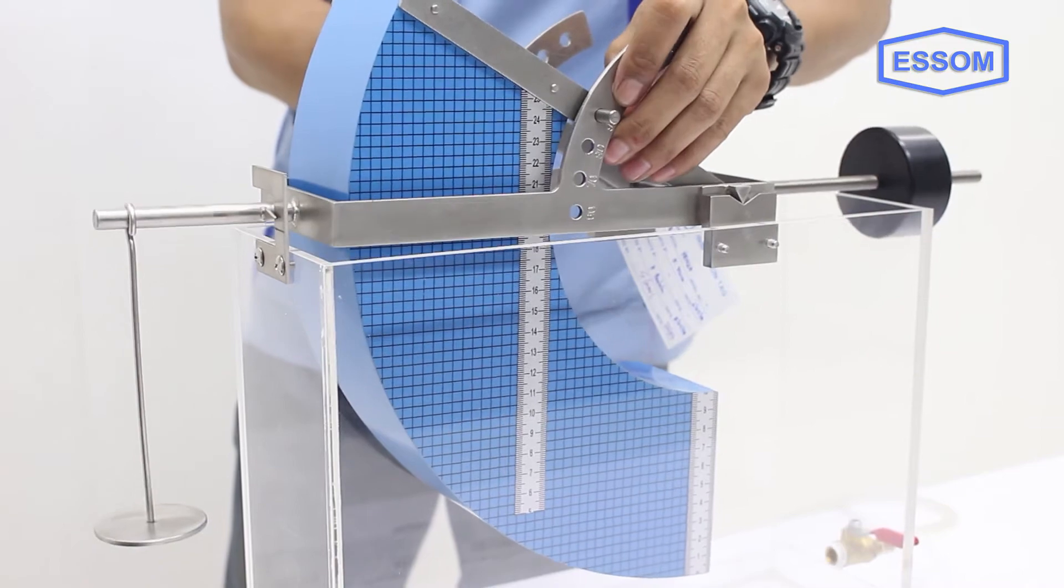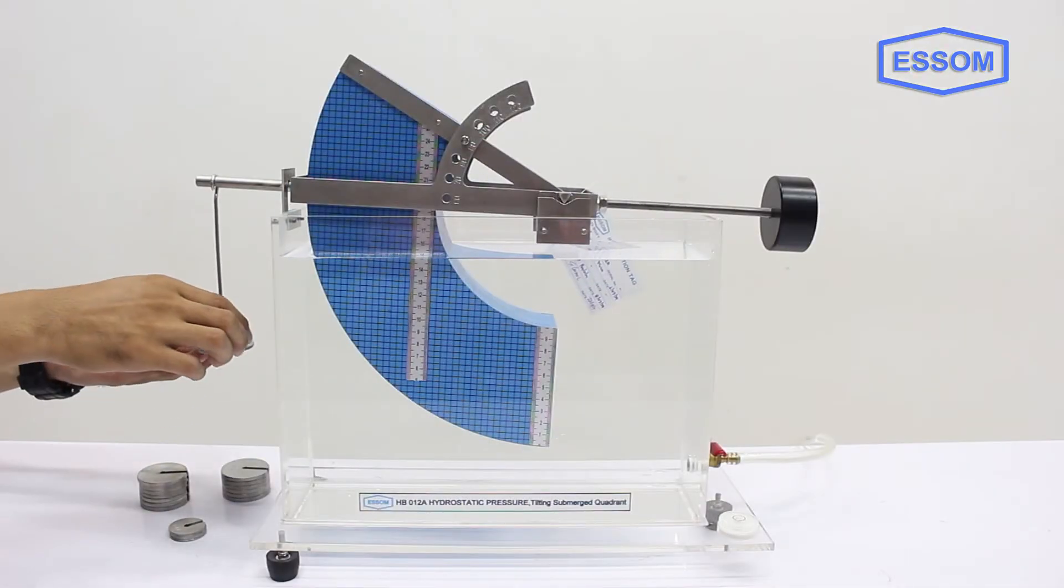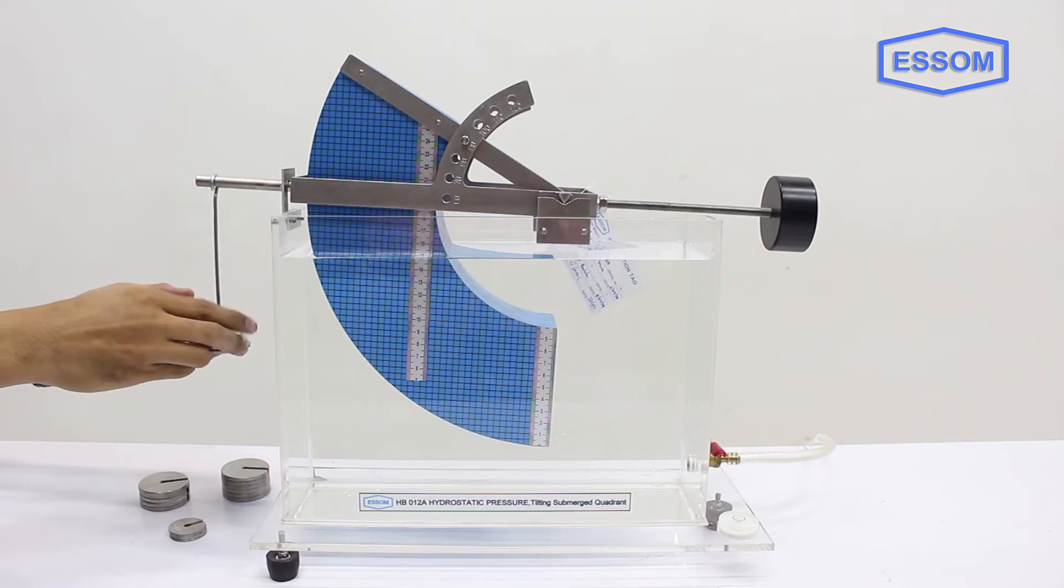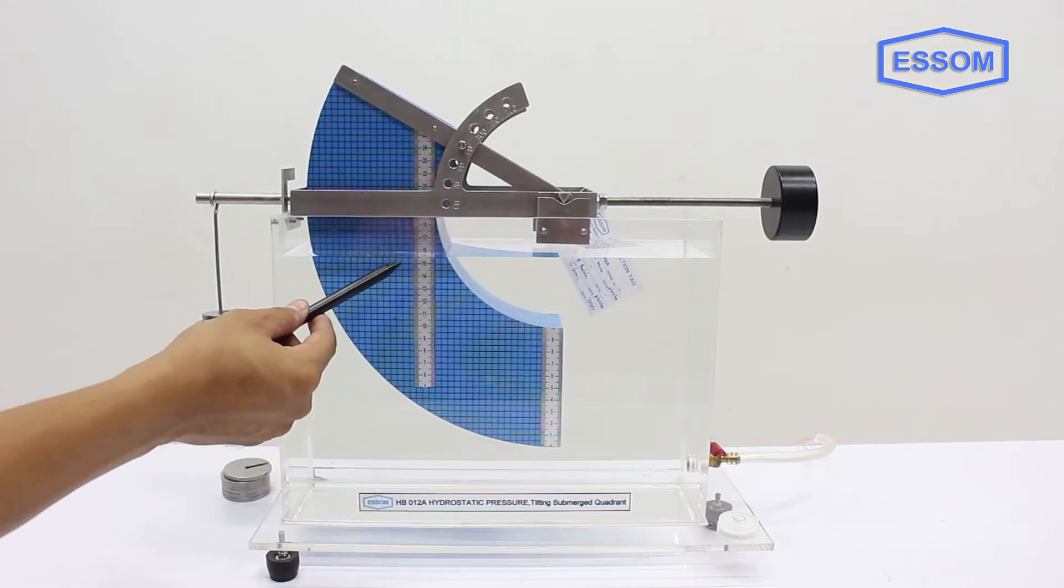The quadrant position is adjustable relative to a balance arm such that the submerged plane surface can be tilted by changing the lock pin position. A depth scale is indicated on the quadrant.